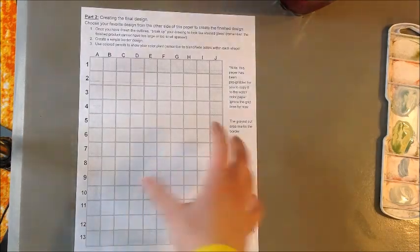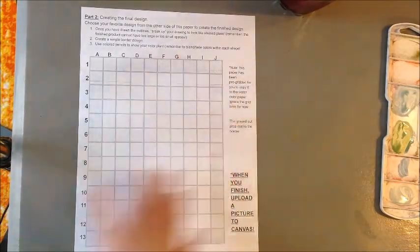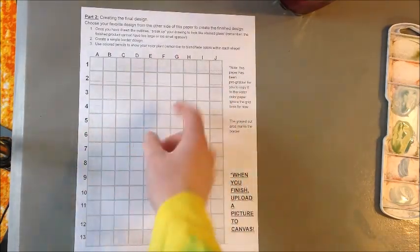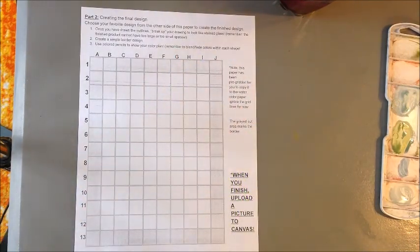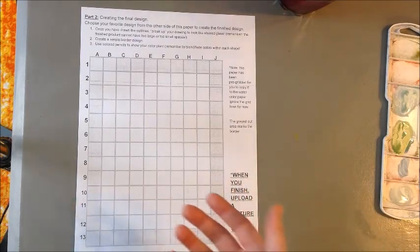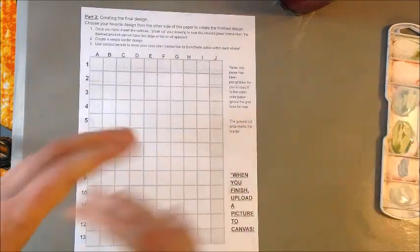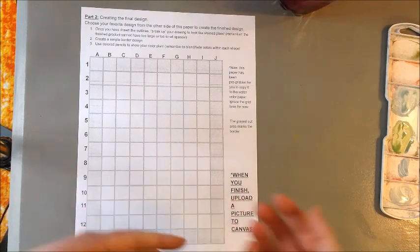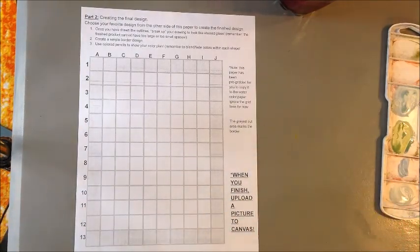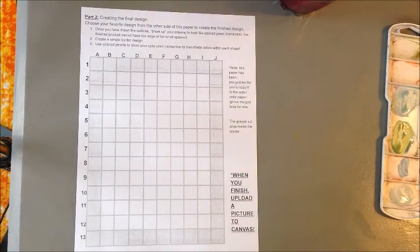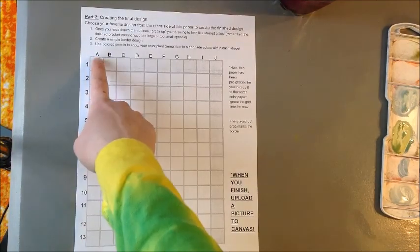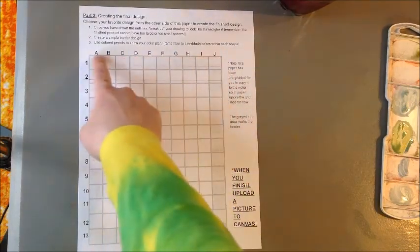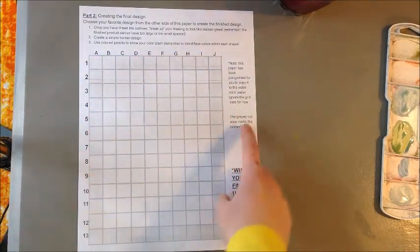So you do not have to use, or you shouldn't use watercolors on this. You do want to use colored pencils. This big note: remember to blend or fade the colors within each shape. So stained glass art often has color blends within their shapes. If you look at the examples I provided on this part of the canvas assignment, you can see that. So it's a little bit hard to see on your copies, but this last outer edge of squares is all for your border design.